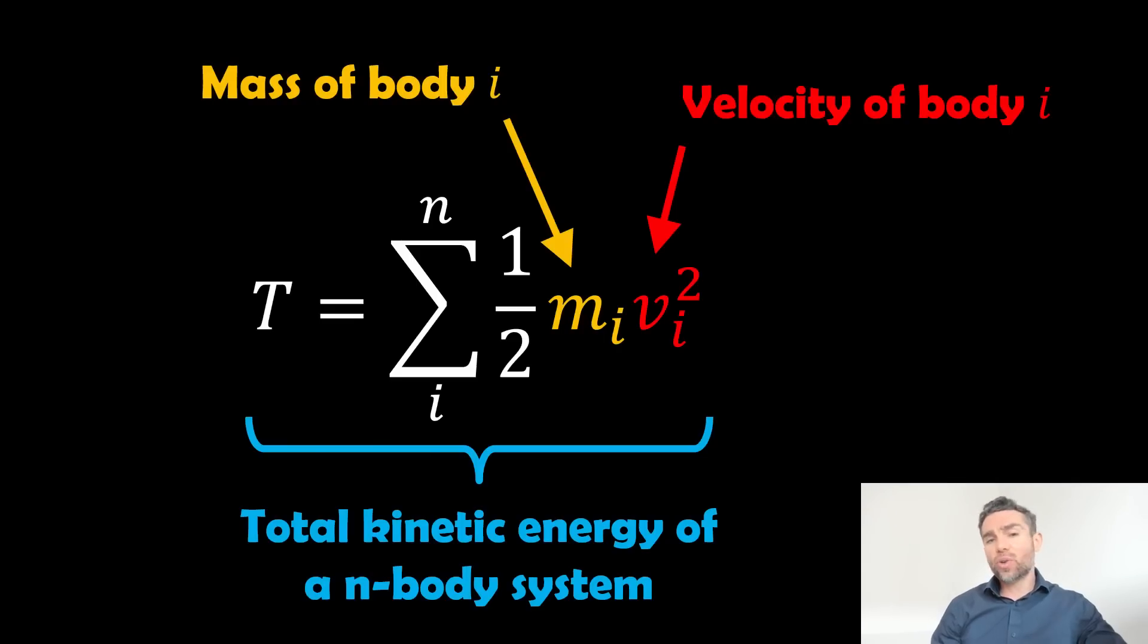So the total kinetic energy of an n-body system. So again, if we've got a galaxy cluster with n number of galaxies, we can write the total kinetic energy like this. So we're basically summing up the kinetic energy of each individual galaxy. So here you've got the mass of body i.